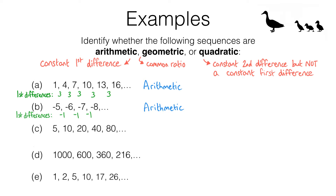Let's have a look at sequence C. We've got 5, 10, 20, 40, 80. Let's check its first differences. To go from 5 to 10 we have to add 5. To go from 10 to 20 we have to add 10. To go from 20 to 40 we have to add 20. To go from 40 to 80 we have to add 40. So we can see this sequence is not arithmetic because we don't have a constant first difference — the first differences are changing.